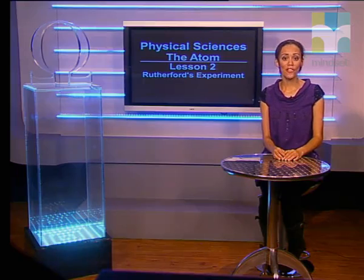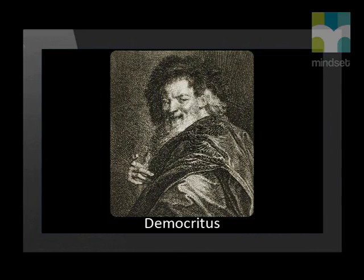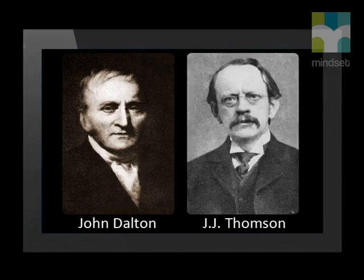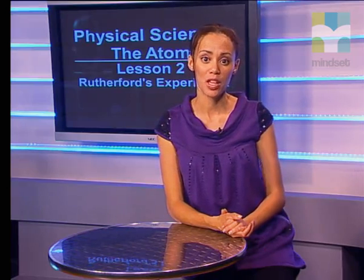Hello, Grade 10s. We have looked at some of the earlier models of the atom, from those held by the ancient Greeks such as Democritus, through to Dalton's atomic model and how this model was replaced by the plum pudding model of Thomson. In today's lesson, we will see how the atomic model changed as new discoveries were made. We will continue to explore the development of the atomic model.